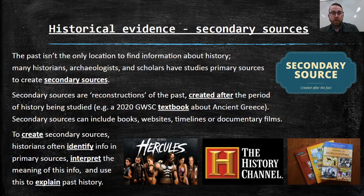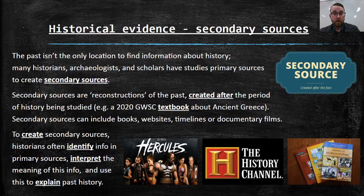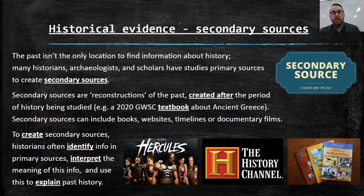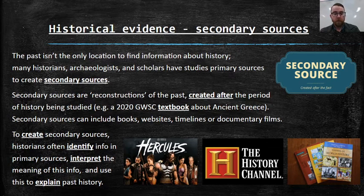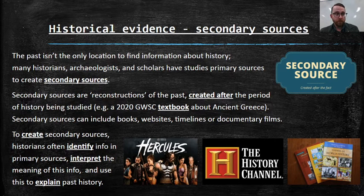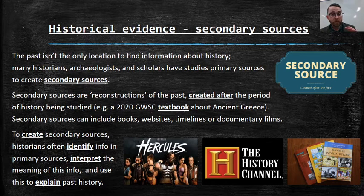Secondary sources can include books, websites, timelines, or even documentary films. To create secondary sources, historians often identify information in primary sources. So to create a textbook chapter on ancient Greece, the authors had to look at primary sources from ancient Greece.